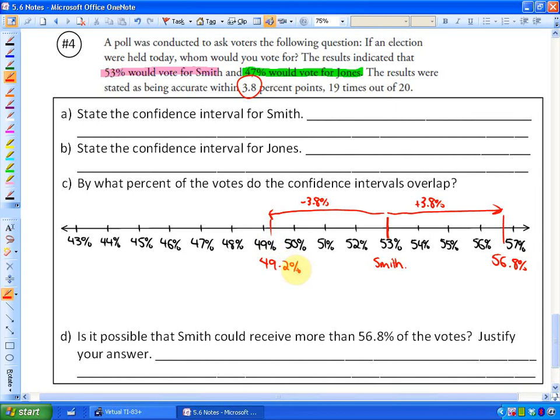So if I can answer the first question, state the confidence interval for Smith. The confidence interval is between 49.2 to 56.8%, or you could state it as the mean, which is 53 plus or minus 3.8%. Either one of those is equally accurate.